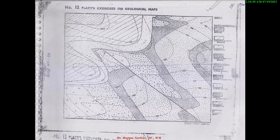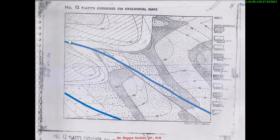Now see the pattern of the contour lines. This pattern is like a V-shape, which indicates a consequent river flowing over this region in a northwest to southeast direction. There is another consequent river also flowing northwest to southeast, and yet another river flowing in the same direction. This V-shape pattern indicates the presence of rivers.